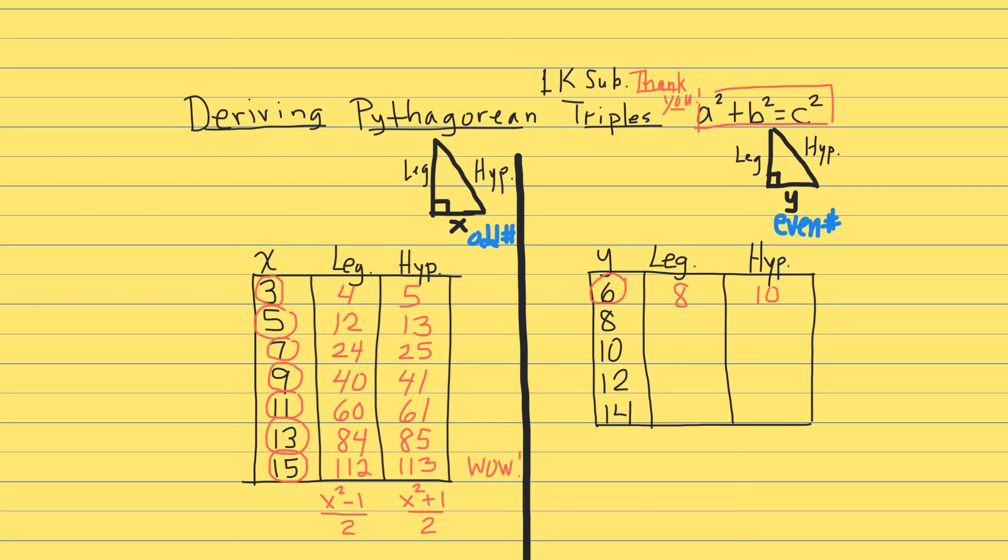6 squared plus 8 squared equals 10 squared. The next even number is 8. So what do we do? Take half of 8, that's 4. 4 squared is 16. 16 minus 1 is 15, and 16 plus 1 is 17.